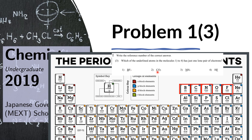Similar is the case with carbon. From the periodic table, we see that carbon is in group 4, so it has four valence electrons. Each of those makes a bond with an oxygen atom, forming a double bond with each of the two oxygen atoms. That means all four valence electrons of carbon are bonding, so carbon has no lone pairs.